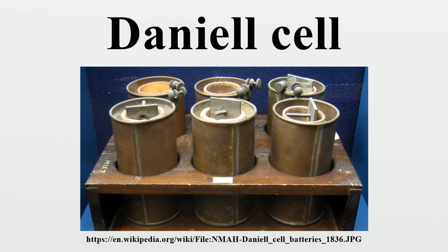The porous pot cell consists of a central zinc anode dipped into a porous earthenware pot containing a zinc sulfate solution. The porous pot is, in turn, immersed in a solution of copper sulfate contained in a copper can, which acts as the cell's cathode. The use of a porous barrier allows ions to pass through but keeps the solutions from mixing. Without this barrier, when no current was drawn the copper ions would drift to the zinc anode and undergo reduction without producing a current, which would destroy the battery's life. Over time, copper buildup would block the pores in the earthenware barrier and cut short the battery's life.